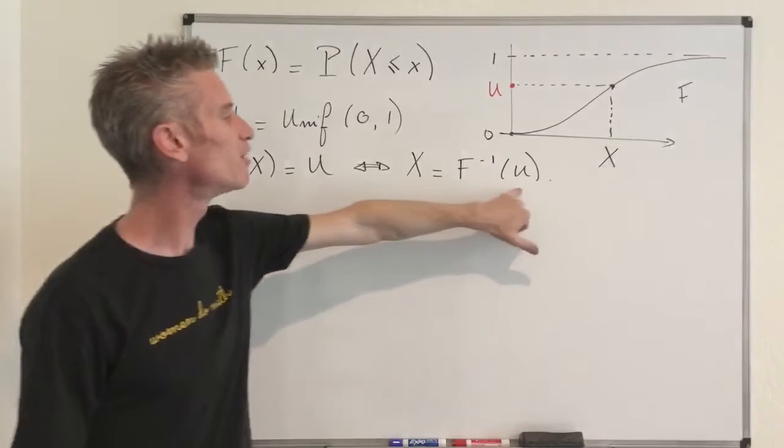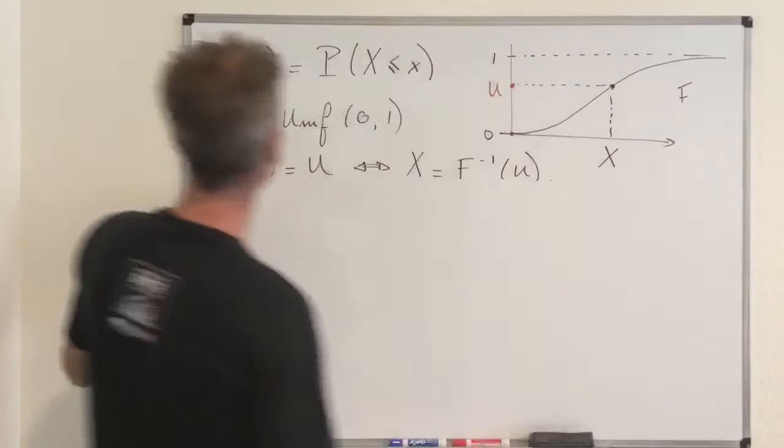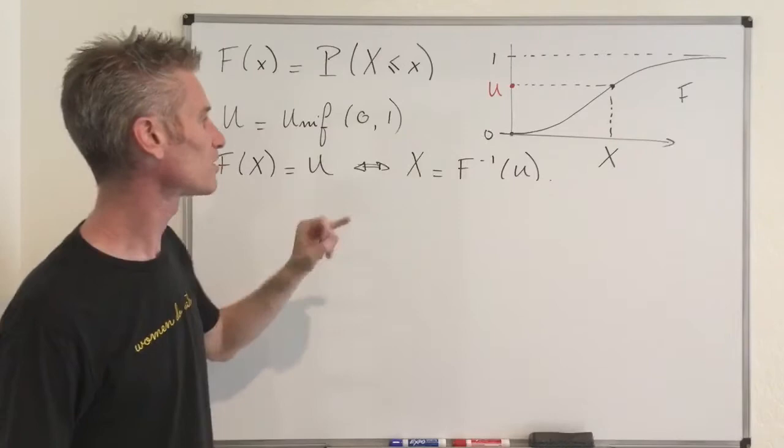Now let's see what happens in the case of the exponential random variable. Remember, what matters to us is to generate exponential, and most of the work is to find the inverse of this function — and that's it.